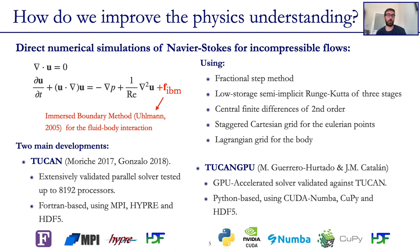In this framework, in the group, there have been two main developments. First of them is Tukan, which was mainly developed by Dr. Manuel Moritsche and Dr. Alejandro Gonzalo back in 2017 and 18. It is an extensively validated parallel solver tested up to roughly 8000 processors. It is Fortran-based, uses MPI, IPREP for the iterative solvers, and HDF5 for the input-output.